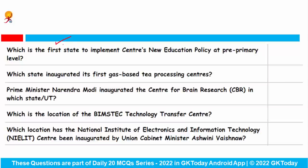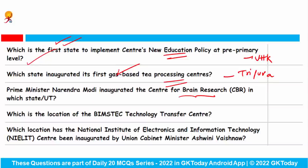Uttarakhand is the first state to implement the Centre's new education policy at pre-primary level. Which state inaugurated its first gas-based tea processing center? This is Tripura. Prime Minister Narendra Modi inaugurated the Center for Brain Research in which state? The answer is Karnataka.